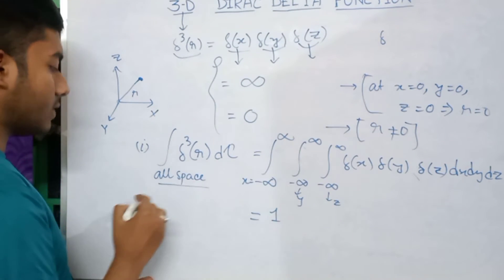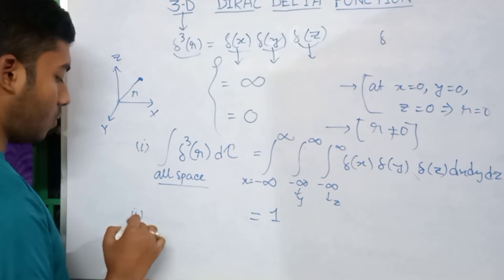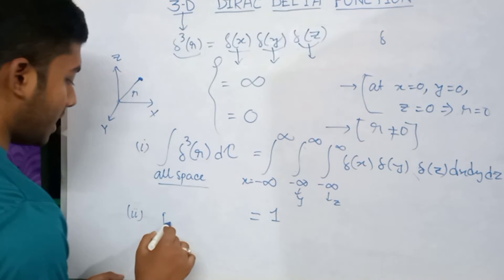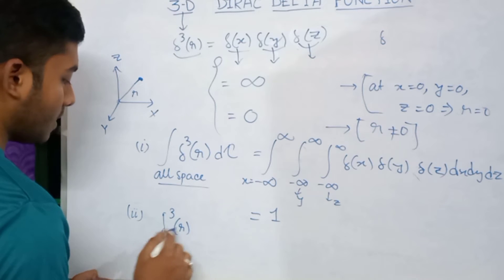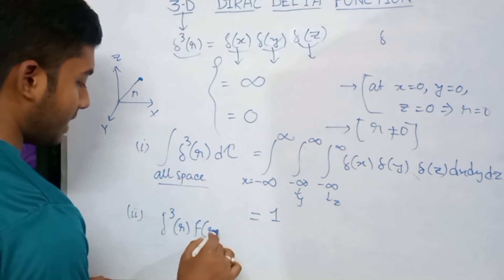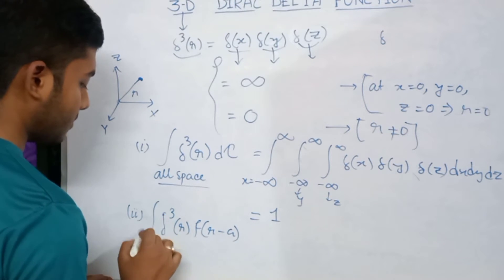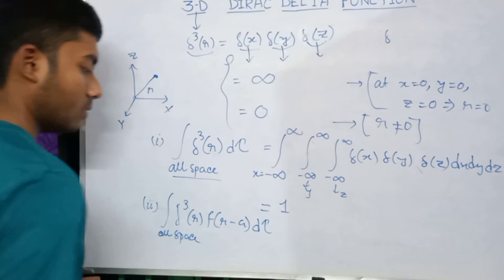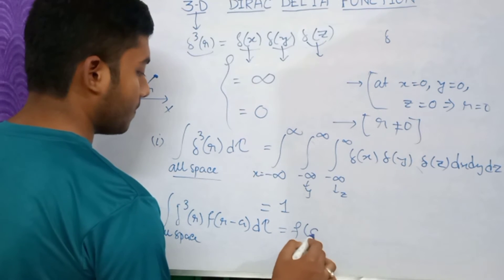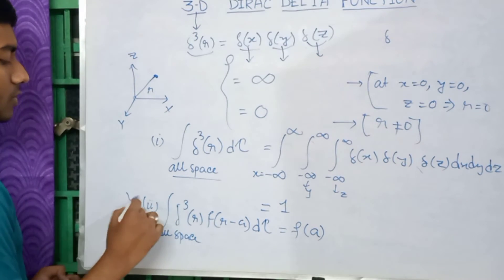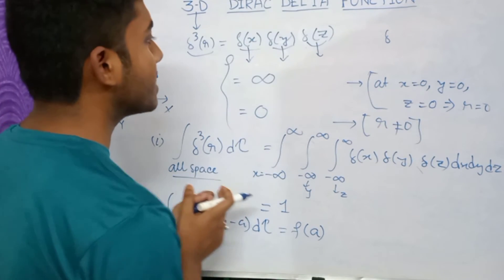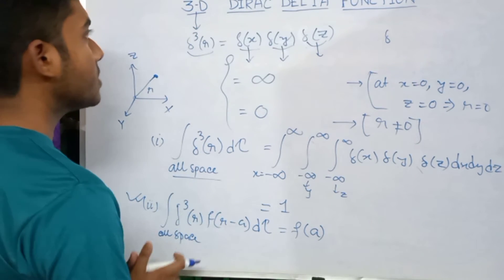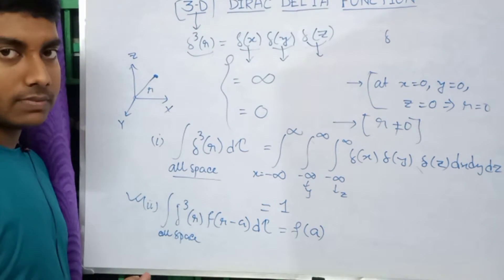The second property of the three-dimensional Dirac Delta function is also similar to its one-dimensional counterpart: the integral over all space of δ³(r−a)·f(r)·dτ equals f(a). These are the key properties of the 3D Dirac Delta function.